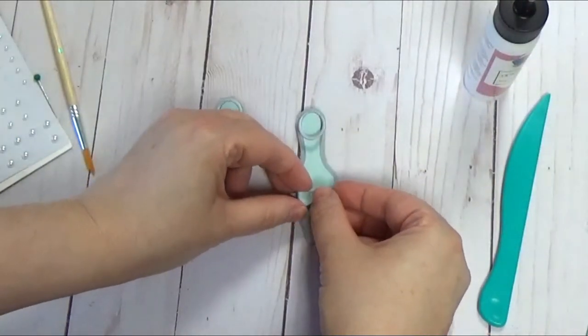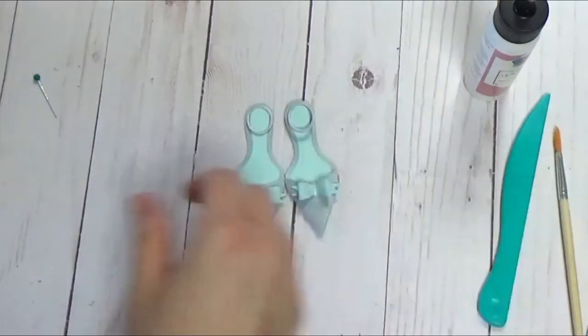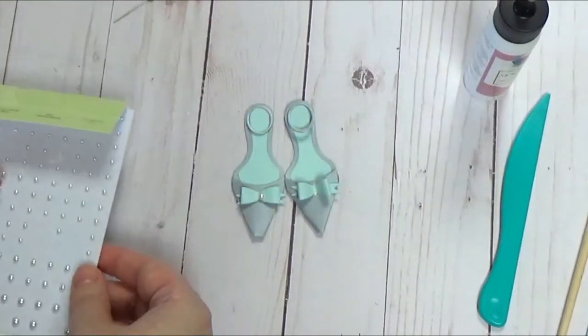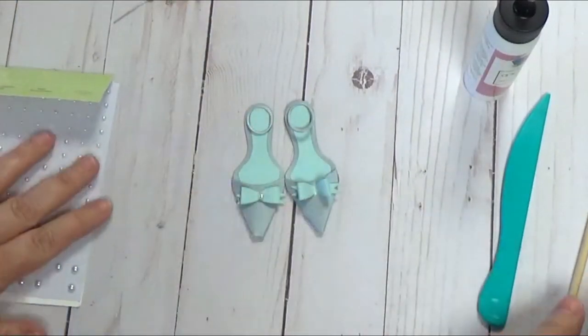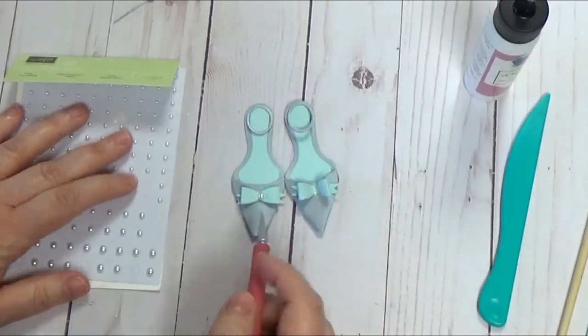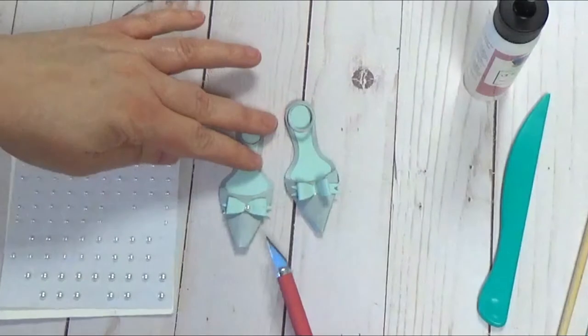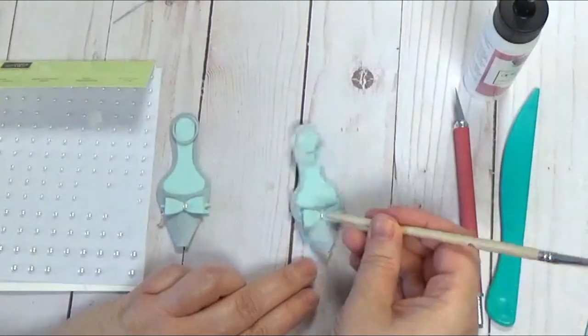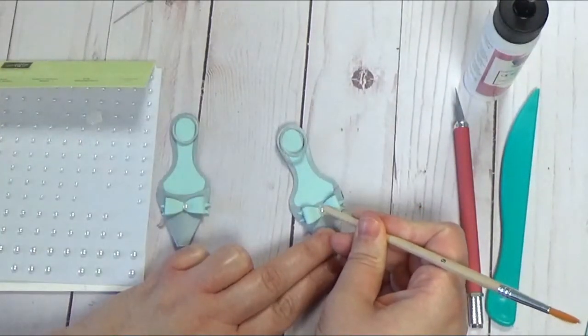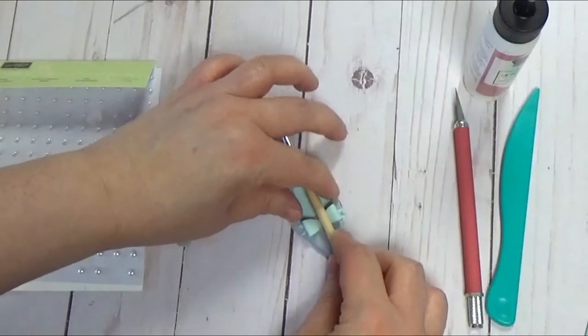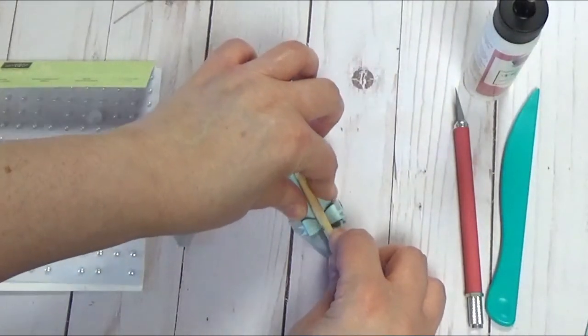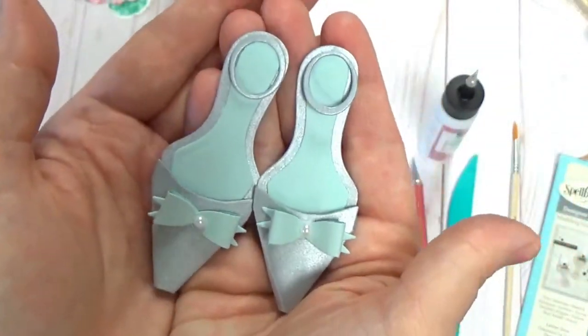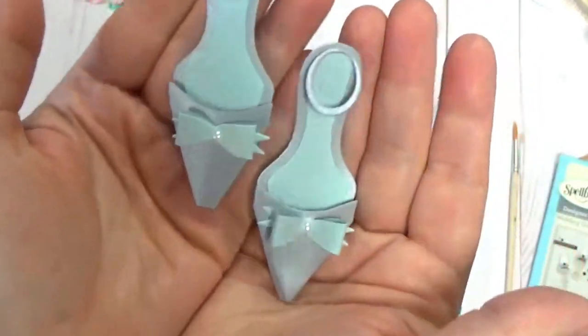I just have some pearls here from Stampin' Up. We're going to go ahead and put a little pearl in the middle of our bow. Let me make sure I have the right size pearl here. I'm just going to kind of press that down with something that's skinnier than my finger. A little beautiful pair of shoes. Isn't that adorable? I just love those. Yay Spellbinders!